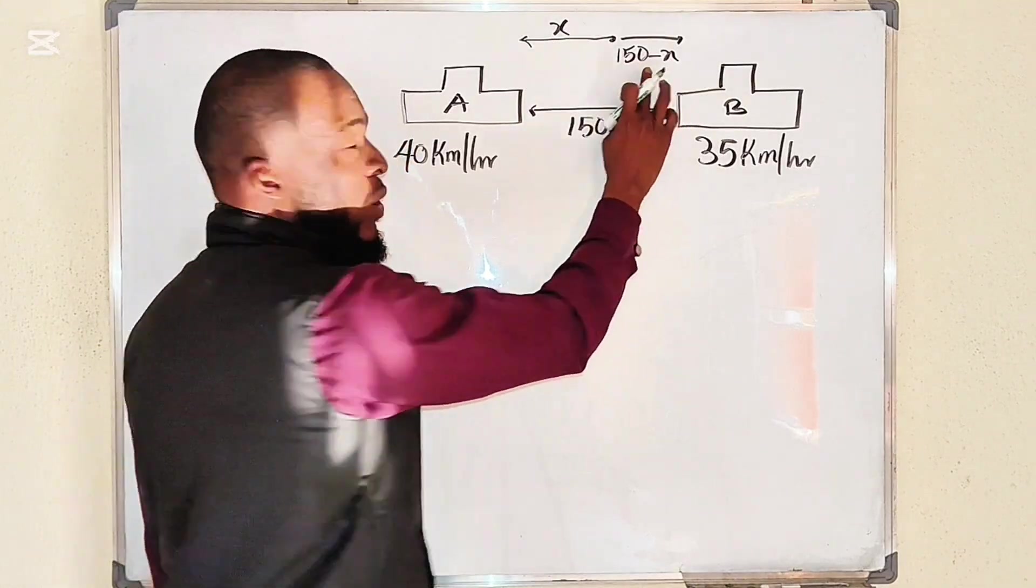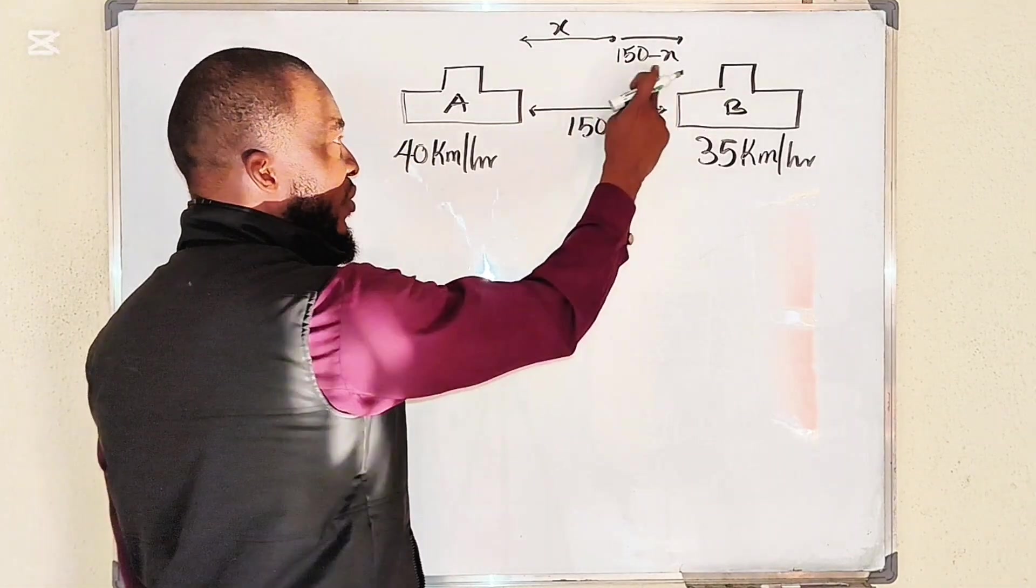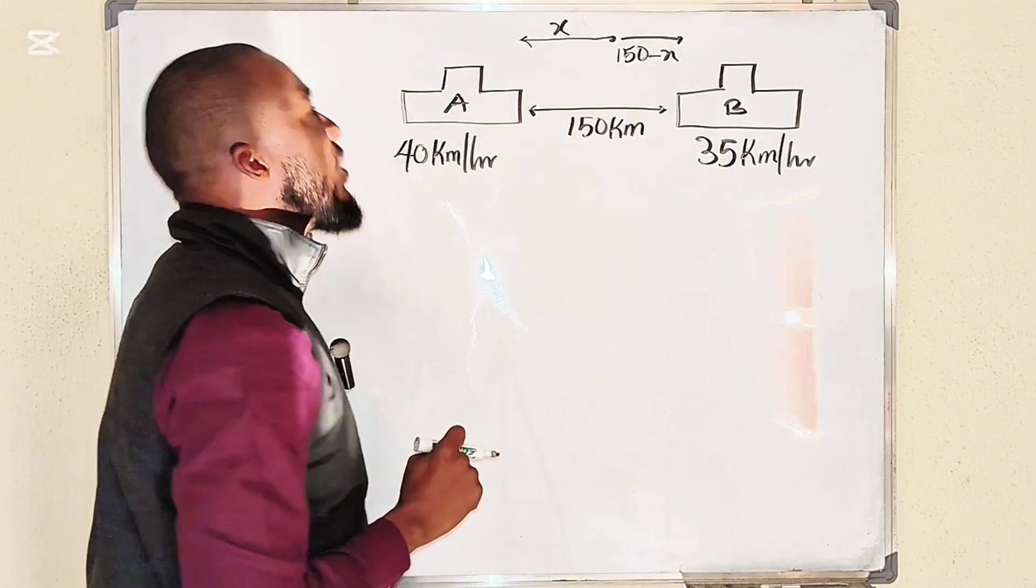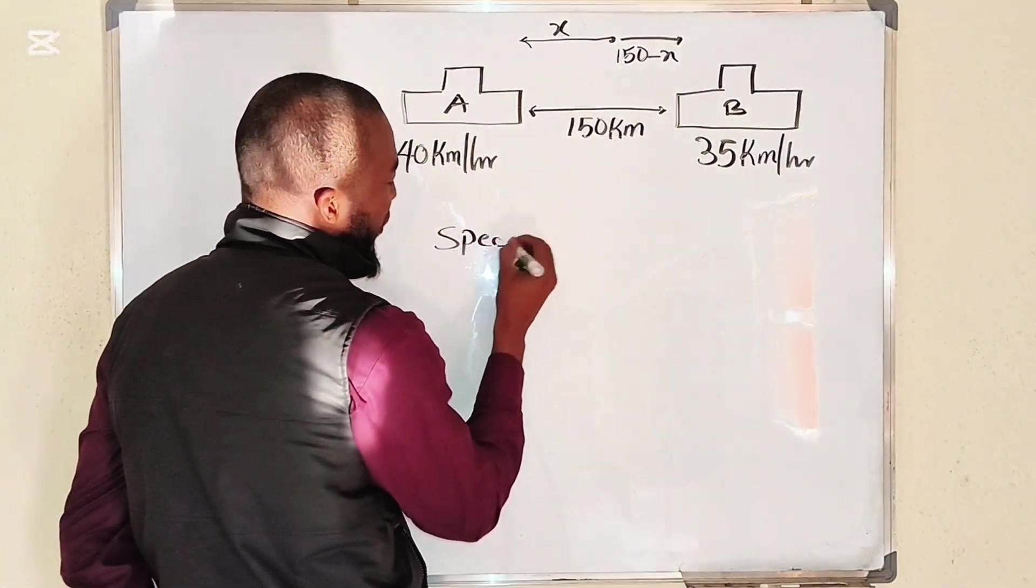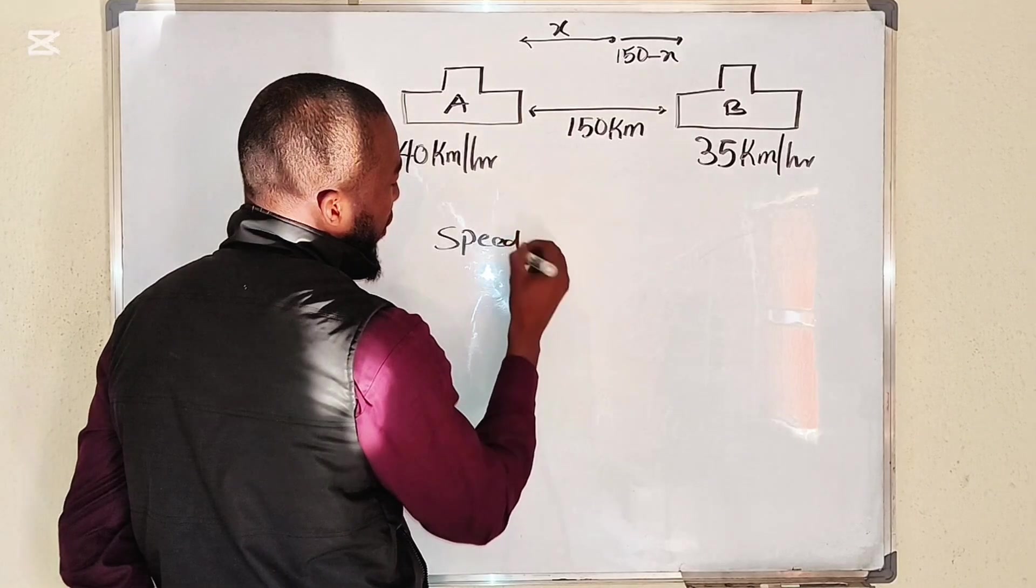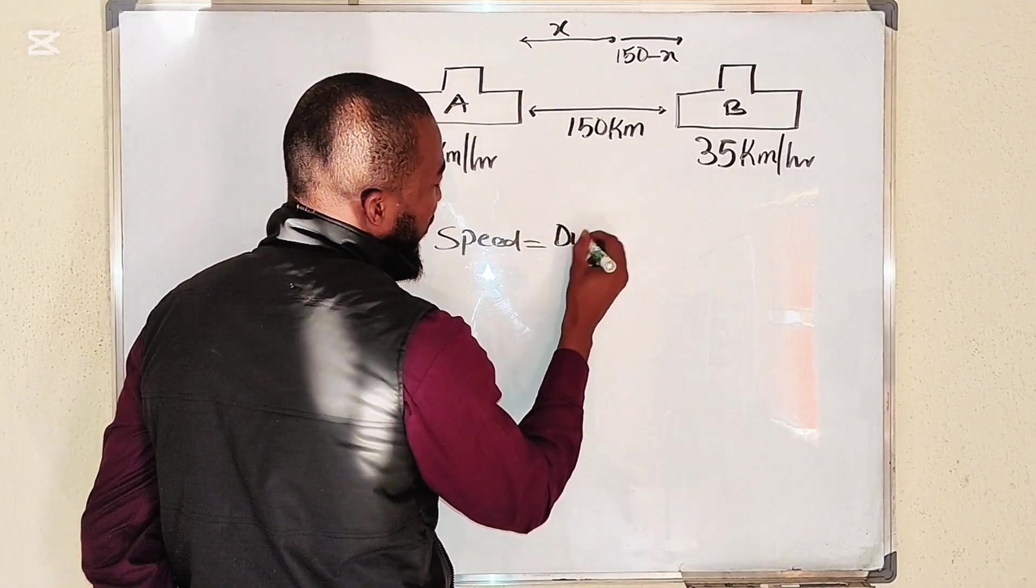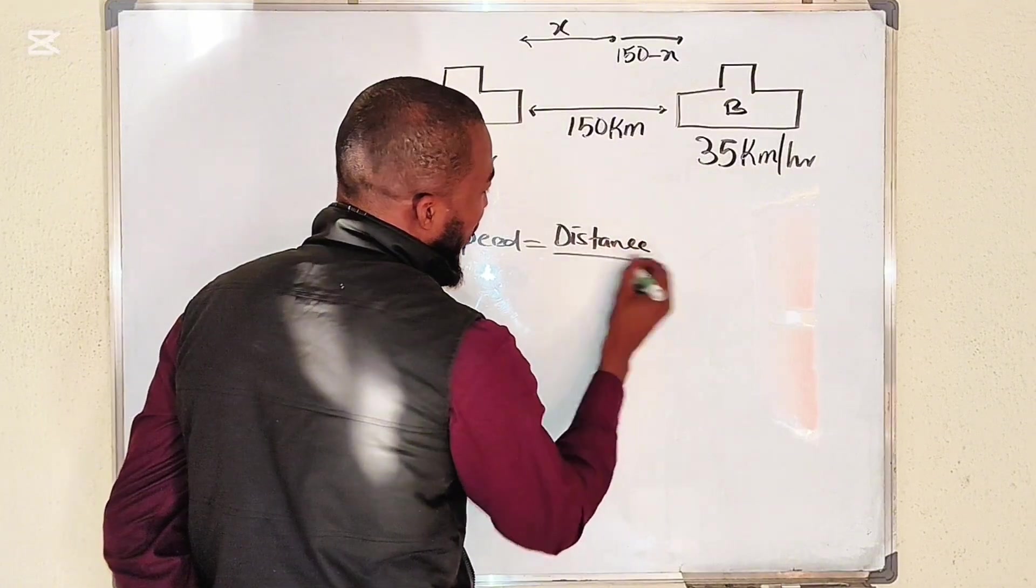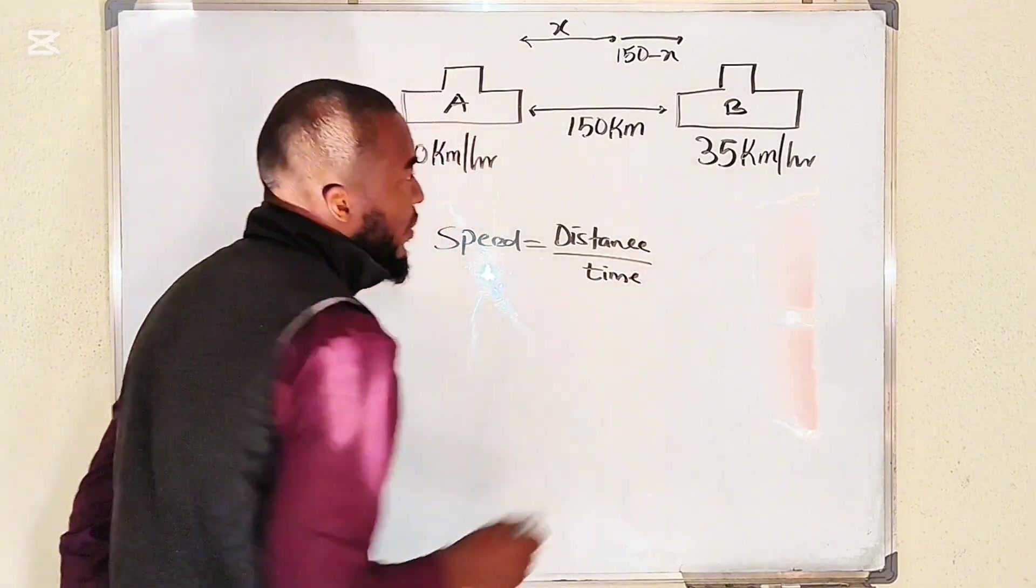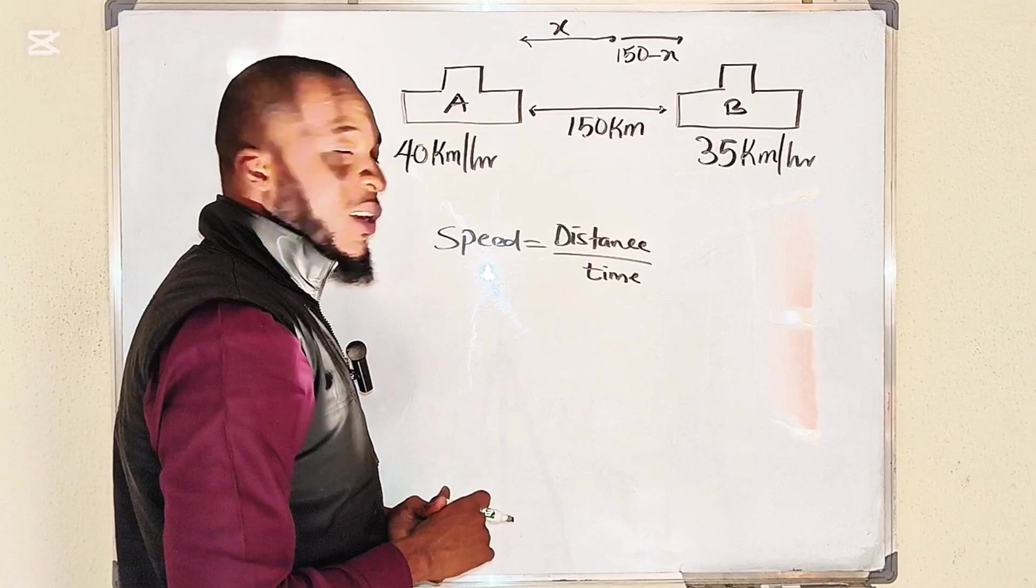Remember that speed is equal to distance divided by time. So what should we find first? Let us find distance first. The distance will be speed times time.